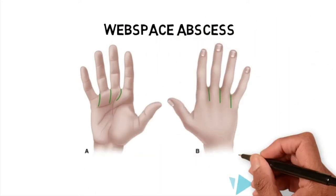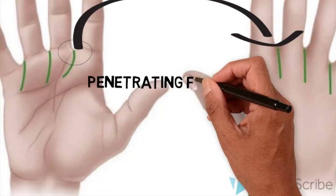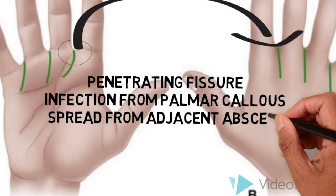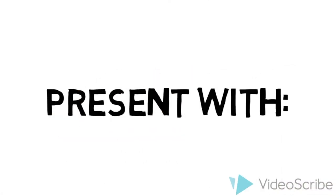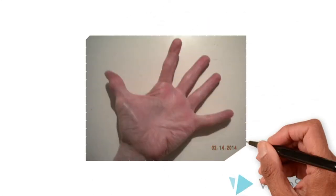A web space abscess is an infection of the webs between the fingers. This usually starts as a palmar infection, which spreads dorsally. This can be as a result of a penetrating fissure, infection from a palmar callus, or spread from an adjacent abscess. The symptoms include pain and swelling of the web spaces, and a cardinal sign is splaying of the fingers.